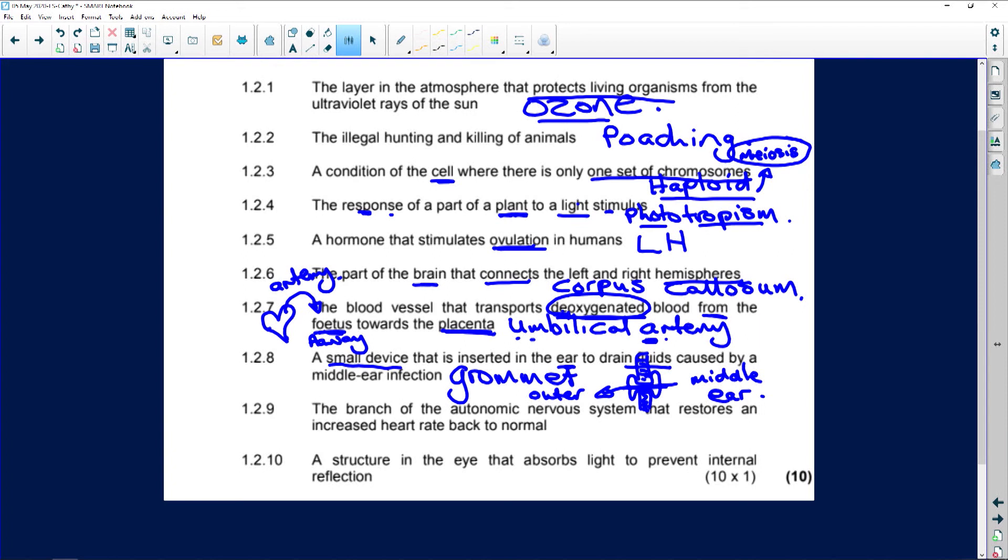And they normally do it when children are very little because they keep getting ear infections. Why? The eustachian tube is very short. So your bacteria and your bugs go up into the eustachian tube, into the middle ear, and start to cause infections. And that builds up fluid and mucus and pus in the middle ear. And it must be drained out. Otherwise, they can't hear properly.